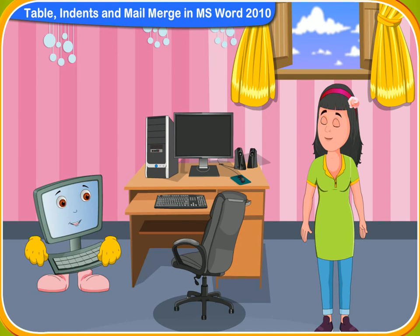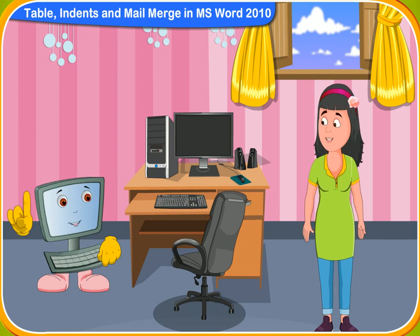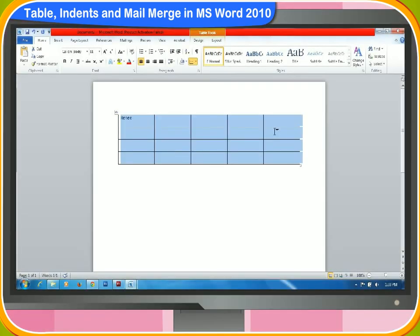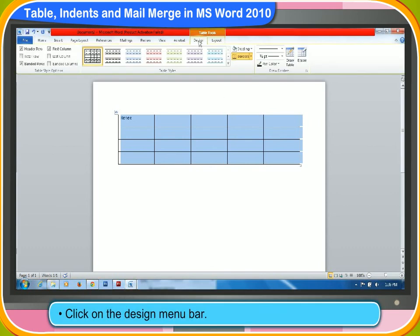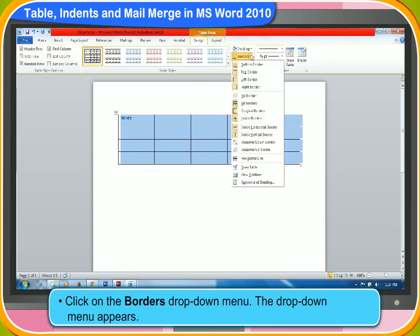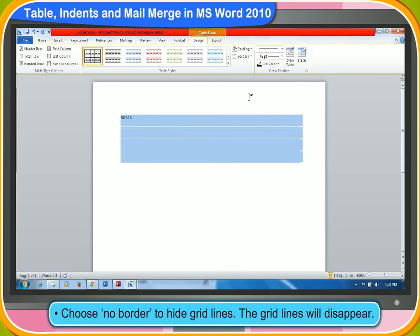Our teacher said that you can also format a table after creating it. How can we do it? Yes, you can format a table too. There are a number of things you can do to a table. You can display or hide the table grid lines by formatting it. First, click on the design menu bar. Then, click on the borders drop-down menu. The drop-down menu appears. Choose no border to hide grid lines. The grid lines will disappear.